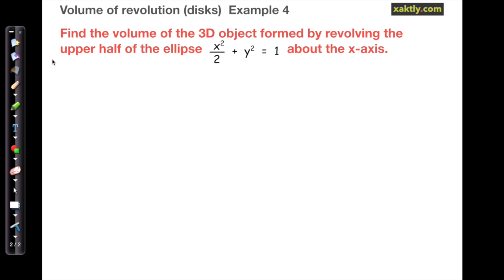In this example, what we want to do is take the upper half of the ellipse and revolve it around the x-axis to make a solid, and then we'll calculate the volume of that solid. The ellipse is x squared over 2 plus y squared equals 1, which is an ellipse with a major axis along the x-axis of 2 and a minor axis of 1 along the y-axis.